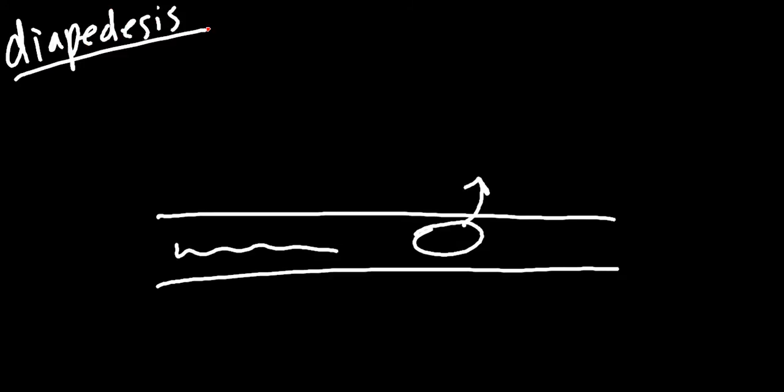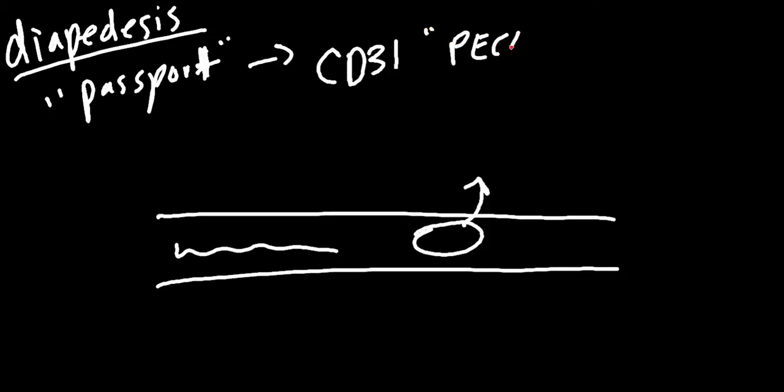Now that we're stopped, we need to get from the endothelium, in the blood with this neutrophil, out into the tissue somehow. So we're going to have diapedesis. And the process of diapedesis is going to rely on a passport-like stage. You're going to need a passport to get across the border. And the border is going to be the endothelium. What's this passport going to be? It's going to be CD-31, and this is also going to be called PECAM-1.